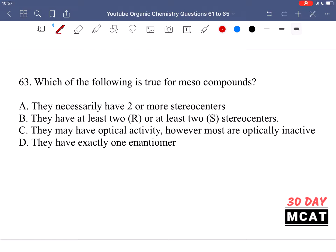In question 63, we're asked which of the following is true for meso compounds. Here is an example of a meso compound. So what is a meso compound? It's a compound that contains chiral centers but overall it has a plane of symmetry, which makes it overall achiral.